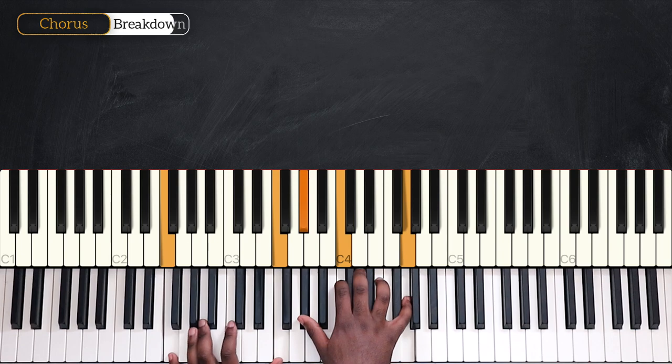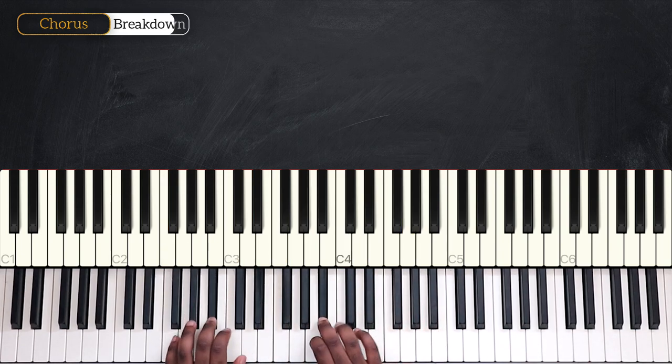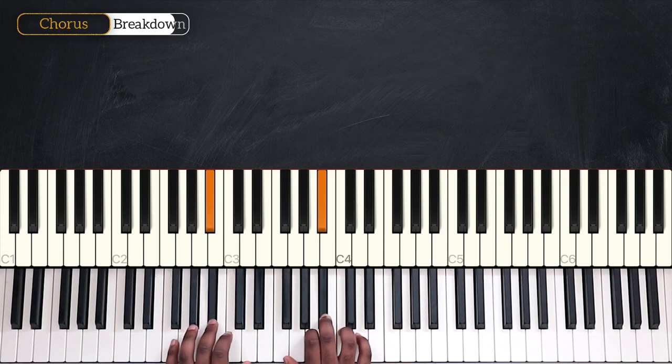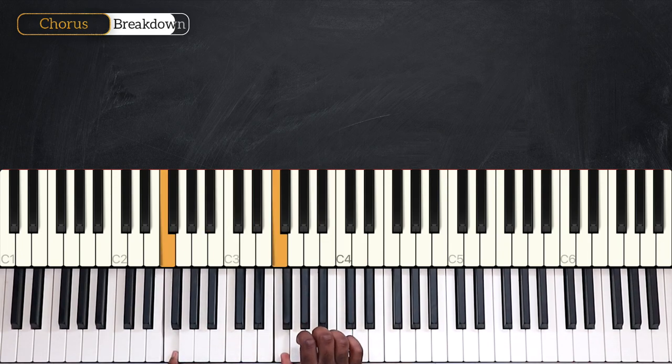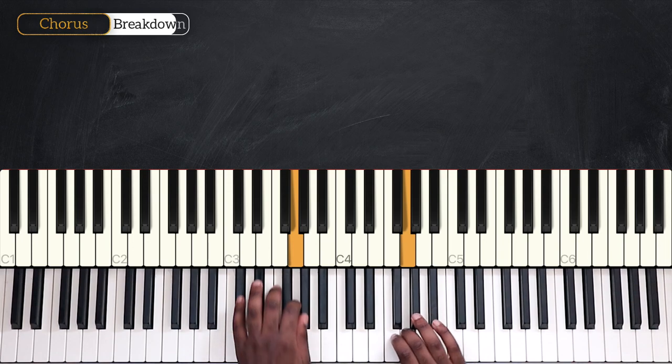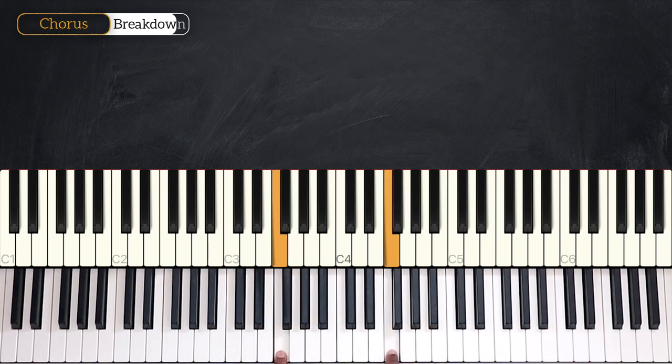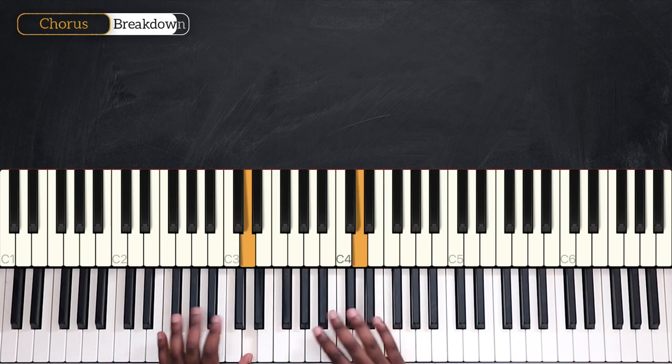After that, we have another melody line. This one is longer than the first one. We have first F, G, then A flat, G, F, D, B flat.